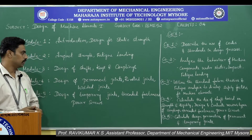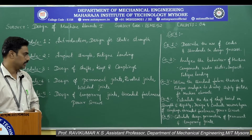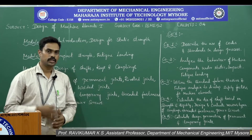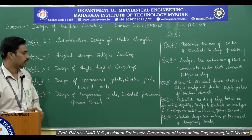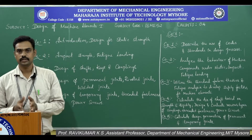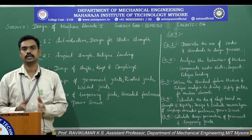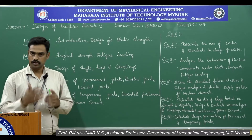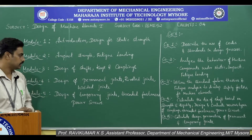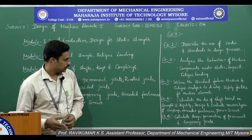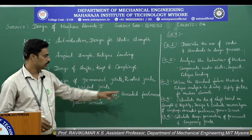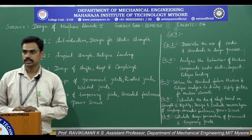CO4 — calculate the diameter of a shaft based on strength and rigidity; based on the stress developed and deformation in the member, you will calculate the diameter of the shaft, and design and evaluate various types of couplings and threaded fasteners, recommending dimensions. CO5 — calculate design parameters of permanent joints such as riveted joints and temporary joints such as knuckle joints and cotter joints.